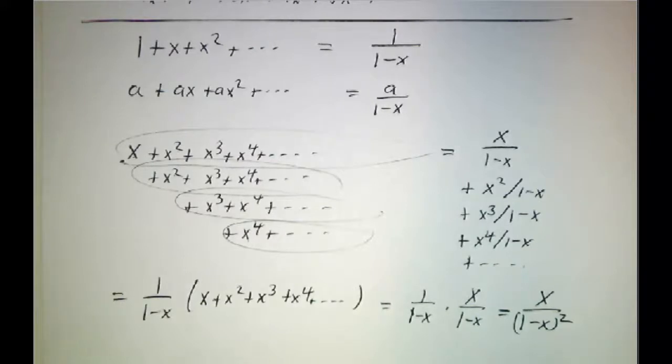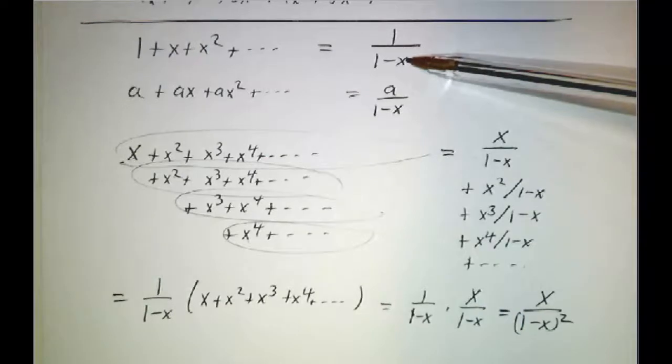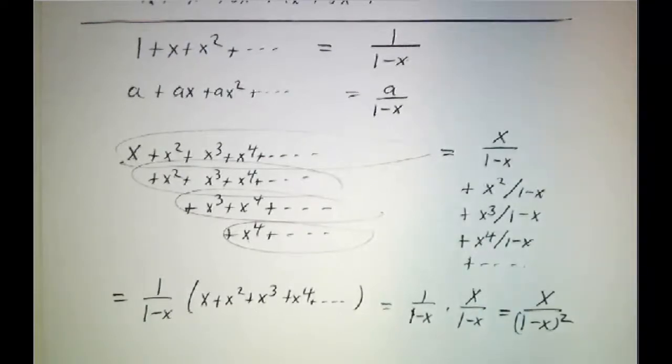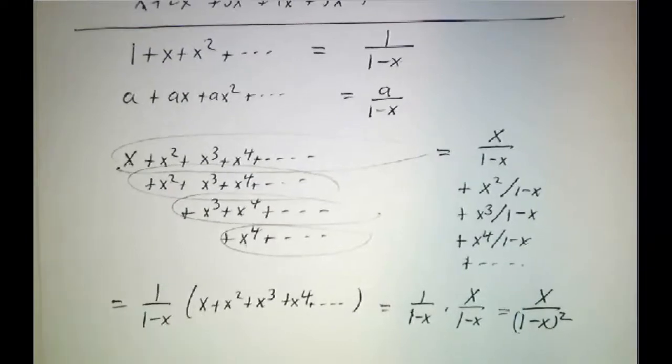Now we didn't actually use any calculus here. We used properties of sums and geometric series and I guess you could say that this formula is the Taylor series for 1 over 1 minus x but that's the extent to which we've actually used calculus.